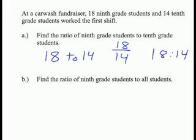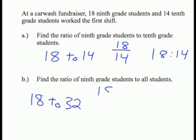For part B, we have to find the ratio of ninth grade students to all the students. Again, we have the 18 ninth grade students to the total of all the students that were there. We must add together the ninth grade and tenth grade students. So we add 18 and 14 to give us 32 students. The ratio of ninth grade students to all students is 18 to 32. There are three ways to write the ratio 18 to 32.